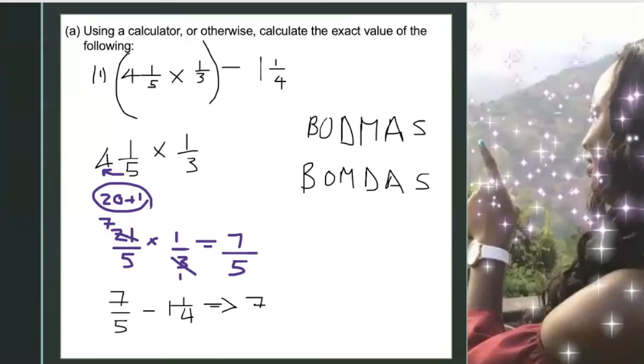Now I am going to change 1 and a quarter to an improper fraction. So I have 7 over 5 minus, changing it, I can multiply 1 times 4, that's 4. And 4 plus 1, that's 5. So that's 5 over 4.